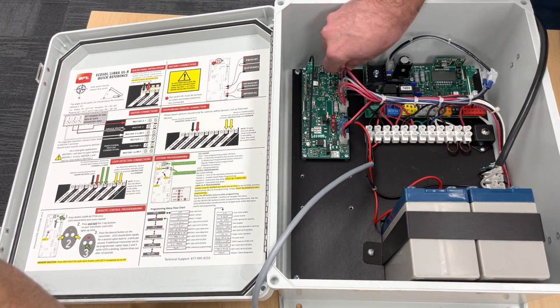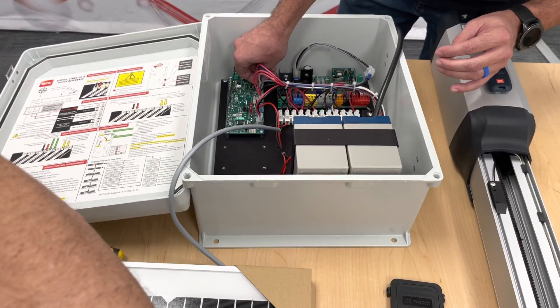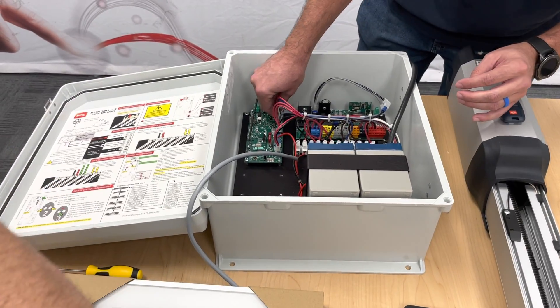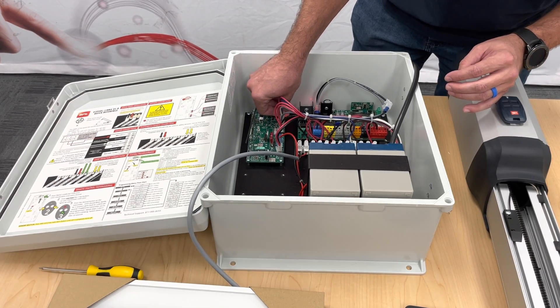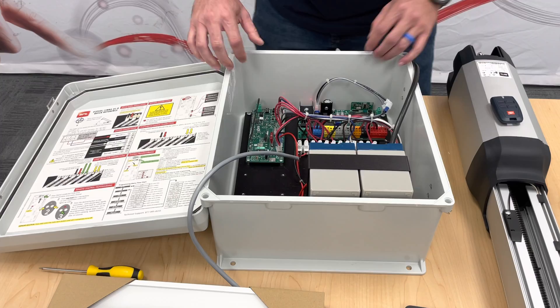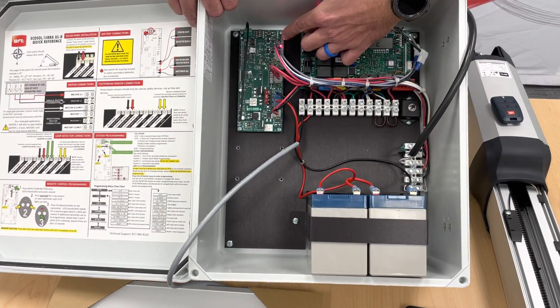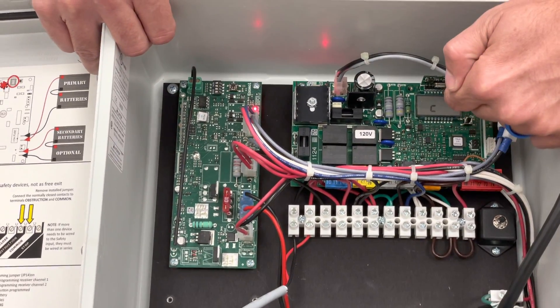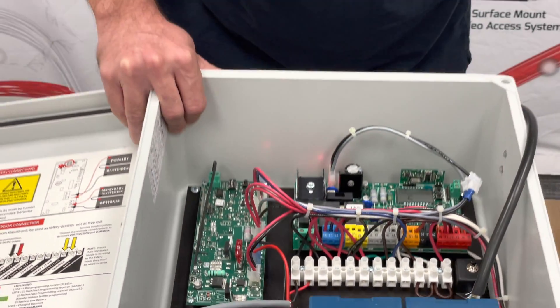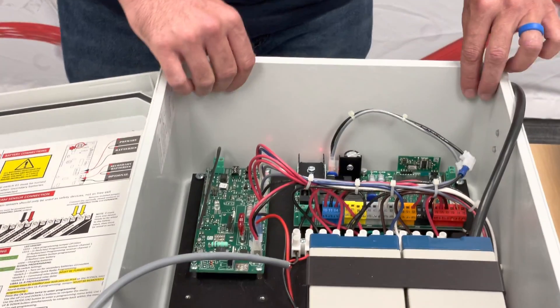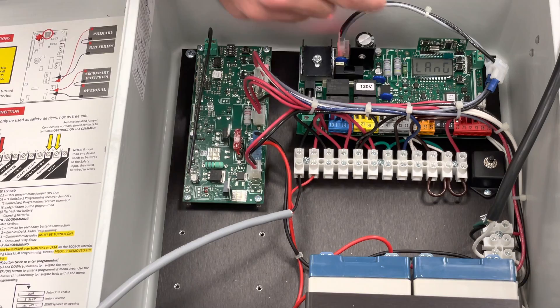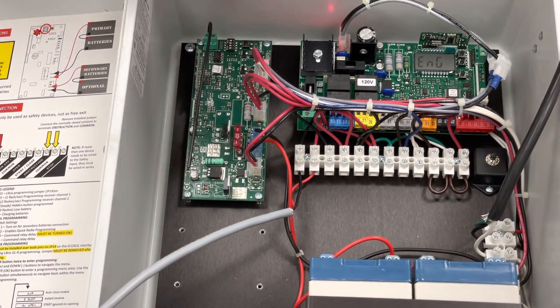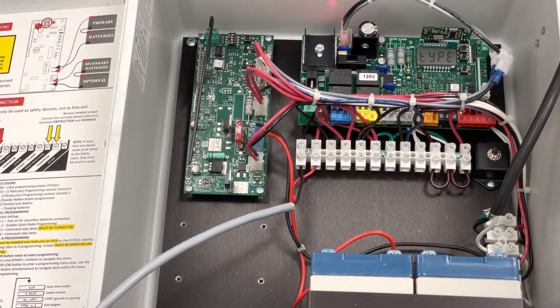So if you notice, that light is lit solid. And that light specifically is telling you that your jumper is on JP14 and you're giving constant power to the board. You have your operator mounted already. Now you are able to actually run through the quick setup. So OK one time. It'll say language. We're going to select English. You select the language you would like.